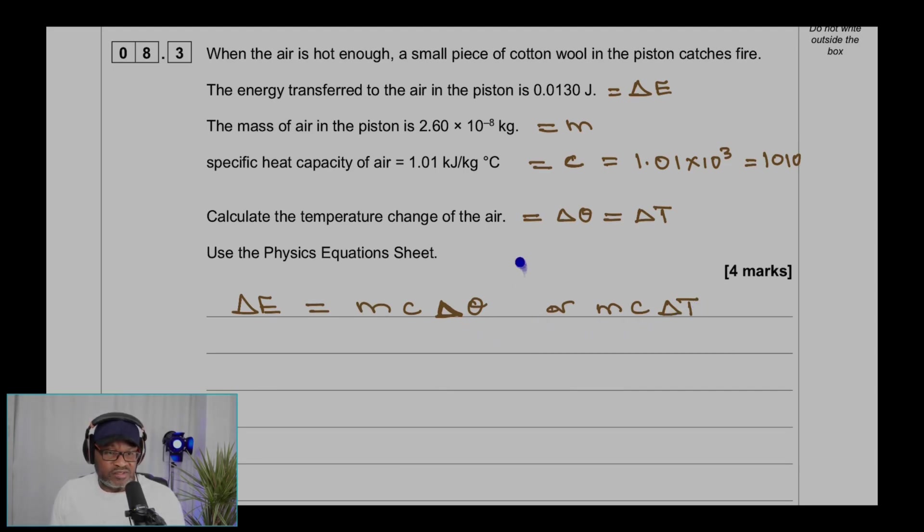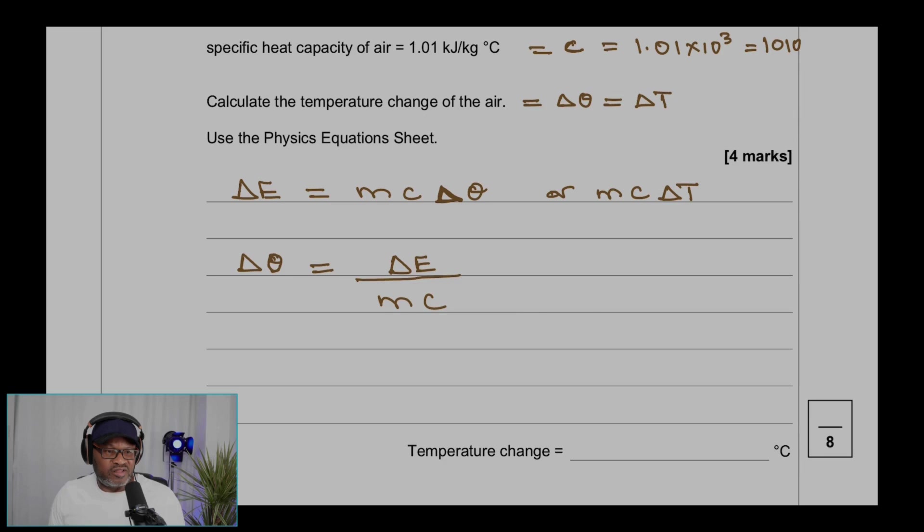Δθ is temperature and ΔT is also temperature. We want the change in temperature. The reason why we put delta is if you have a change here, you must have a change here somewhere. And what's changing is the temperature, so we put delta here. Sometimes you might see it written as E = mcθ. Either way, it's fine. We're making Δθ the subject as temperature here. Therefore, Δθ = ΔE/mc.